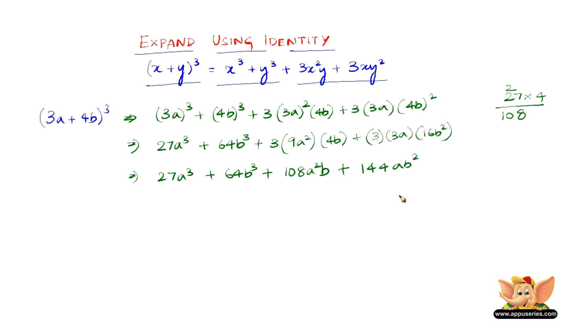Therefore the expansion of 3a plus 4b the whole cube is 27a cube plus 64b cube plus 108a square b plus 144ab square.